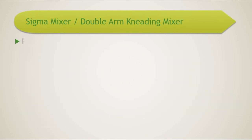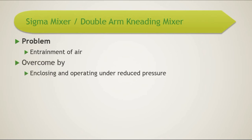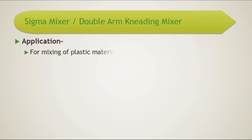One problem encountered in the mixing of semi-solids is the entrapment of air. The sigma arm mixer can be enclosed and operated under reduced pressure to avoid entrapment of air. The sigma mixer is used for mixing of plastic materials like pill masses, tablet granule masses, and ointments.